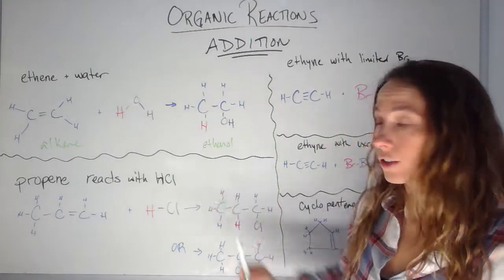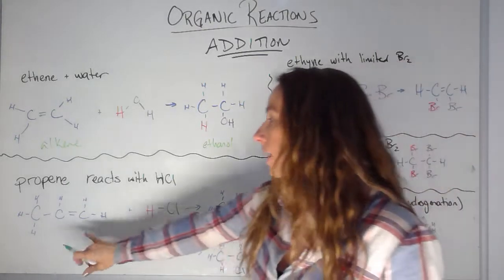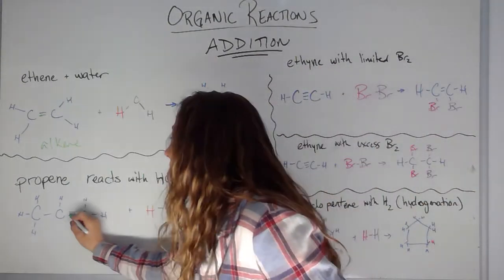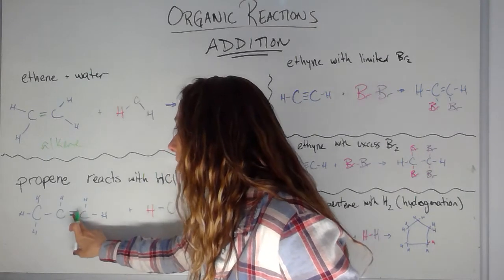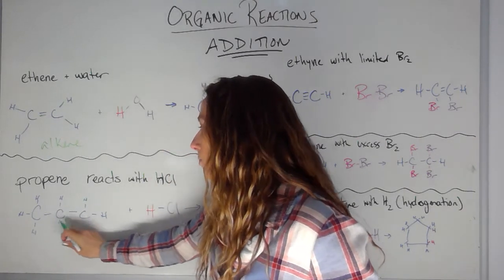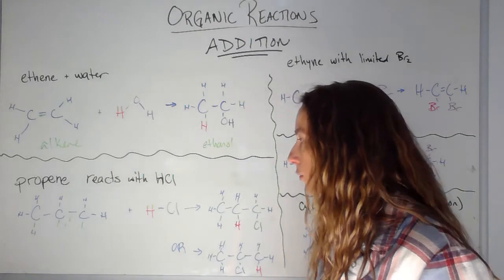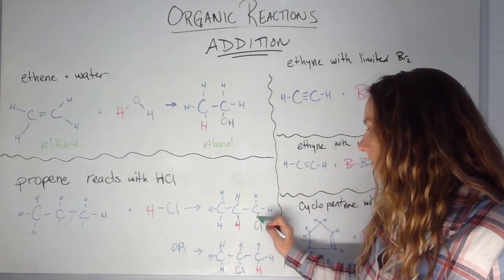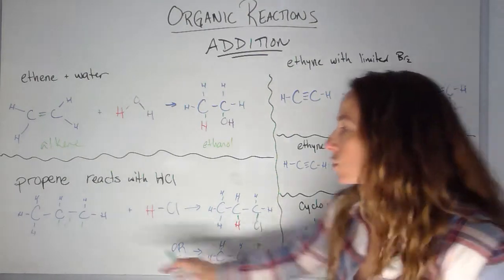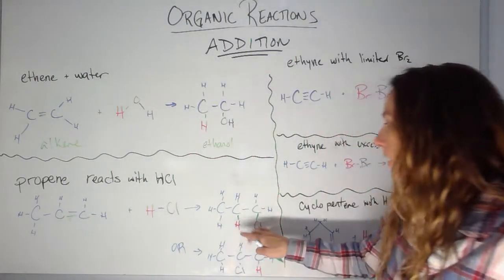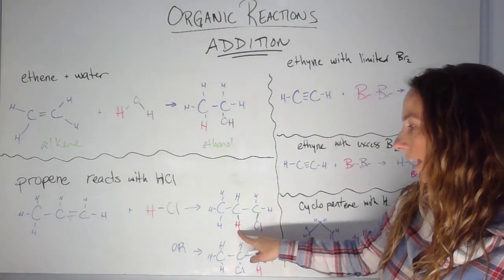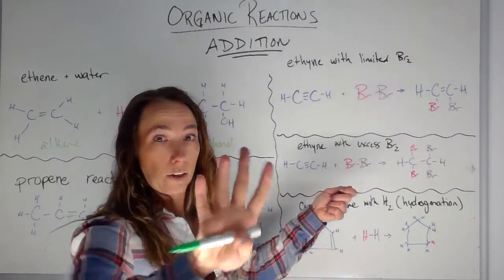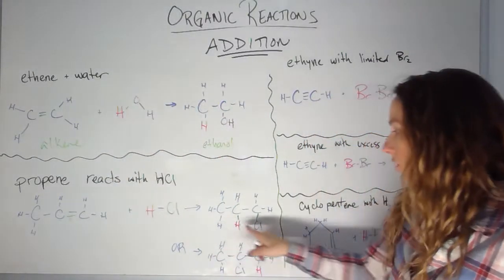So propene reacts with HCl. Here's another example. Here I have my double bond again. So my double bond is going to break and open up. So this bond breaks and opens up. And if it breaks, then I have a spot available at this carbon and a spot available at that carbon to reach out and grab something. So here it is, right? Here's that spot and here's that spot. And so this was a double bond, but it opens up and it's allowed to grab an H and grab a Cl. So the double bond grabbed an H and the other one let go and grabbed a Cl.